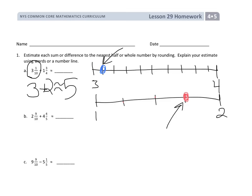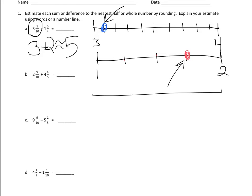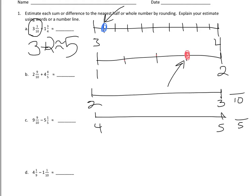Students are going to continue to do this work with the number line. On problem B, they're going to draw a number line between 2 and 3 and break it up into tenths. The next number they're going to place between 4 and 5, breaking that number line into fifths. The reason I know what to break each unit into is by looking at the denominator of the problem.